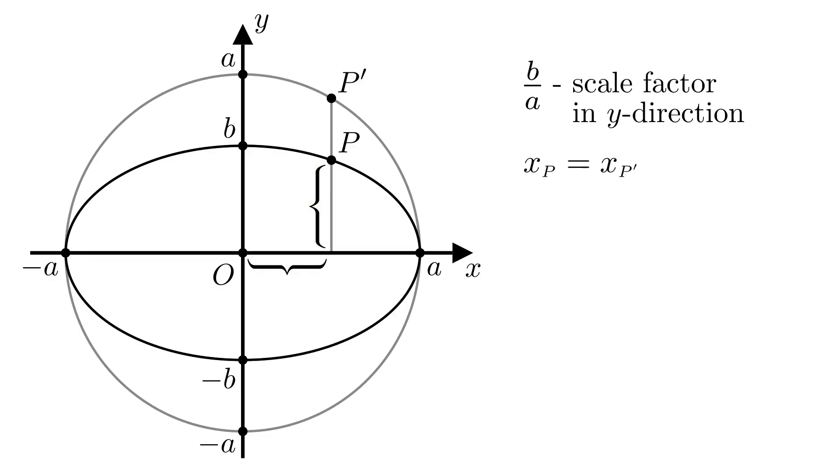but the y coordinate of P is equal to b over a times the y coordinate of P'. We'll need the other way around, so xP' is equal to xP and yP' is equal to a over b times yP.